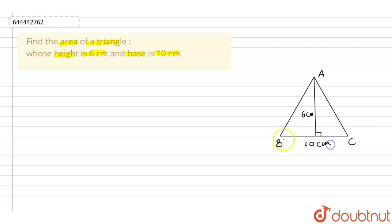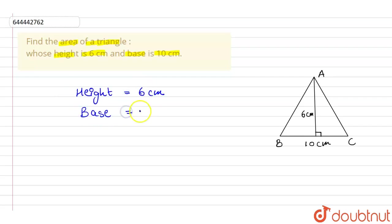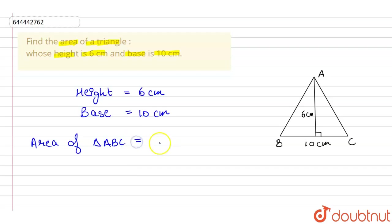The base BC is given as 10 centimeters, and we have to find out the area of triangle ABC. The height is 6 centimeters and the base is 10 centimeters. The area of the triangle formula is half into base into height.